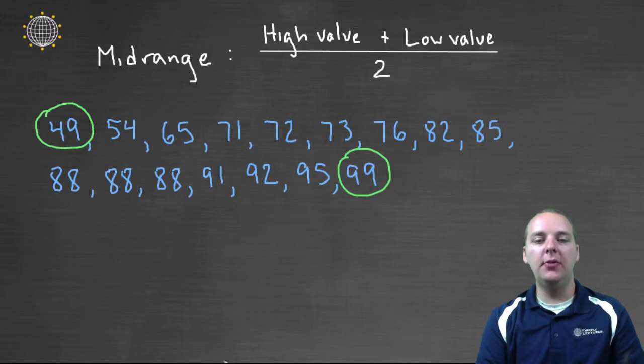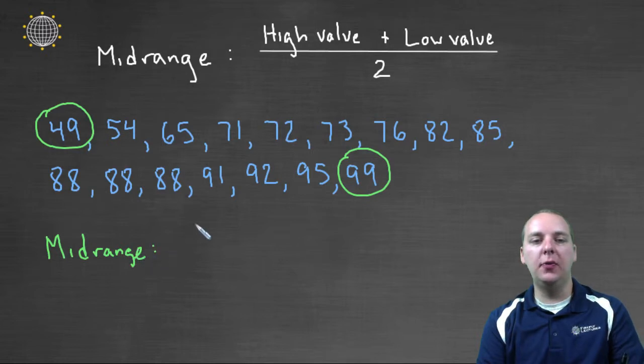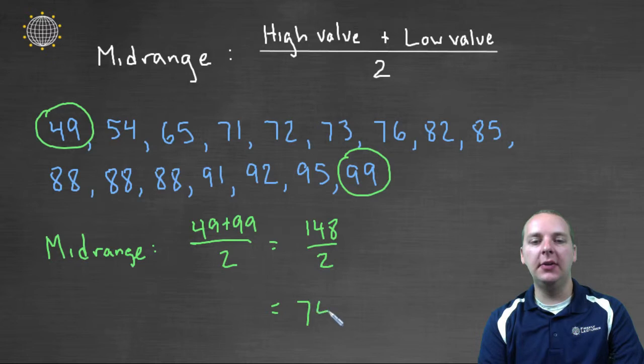And so to find the midrange, what I'm going to do is take the forty-nine plus the ninety-nine and divide that quantity by two. So forty-nine plus ninety-nine is a hundred and forty-eight. Divide that by two and we would get a midrange of seventy-four.